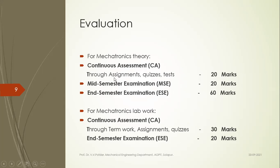For evaluation: in theory, continuous assessment includes assignments, CA1, CA2, and quizzes — 20 marks total. There's a mid-semester exam for 20 marks after around 45–50% syllabus coverage, and an end-semester exam for 60 marks — totalling 100 marks for theory. For lab work, term work and journals carry 30 marks, and the end-semester oral exam carries 20 marks — totalling 50 marks.